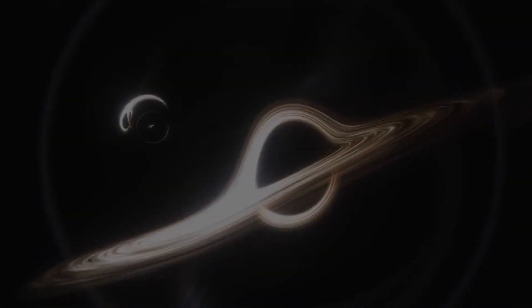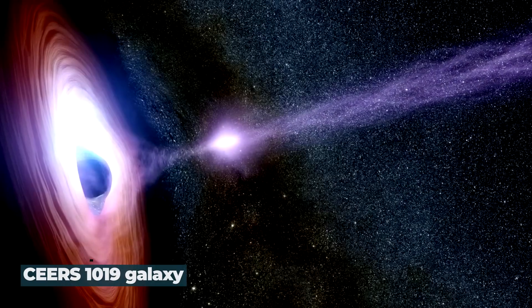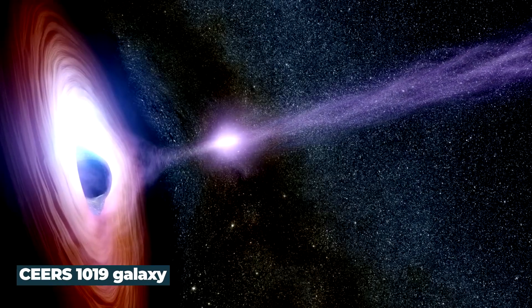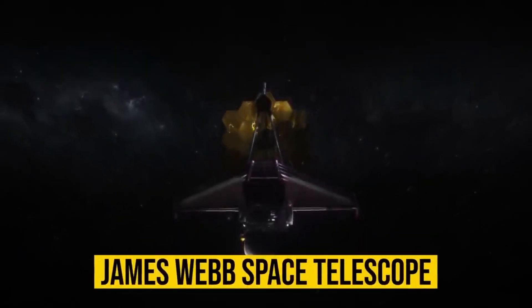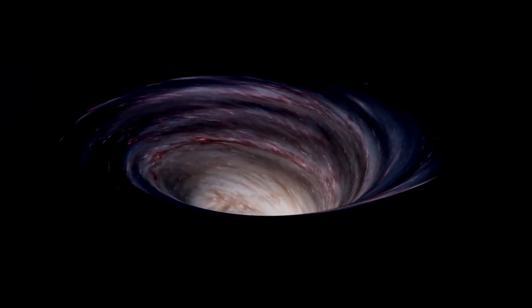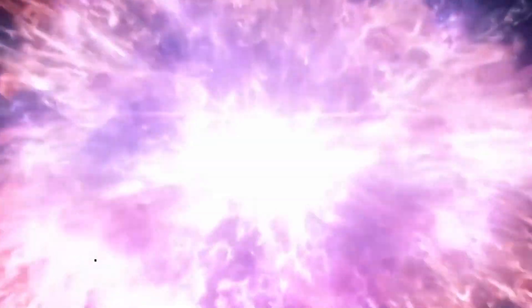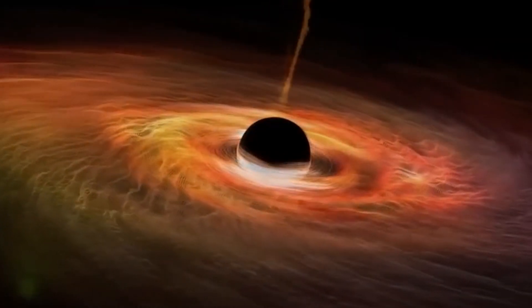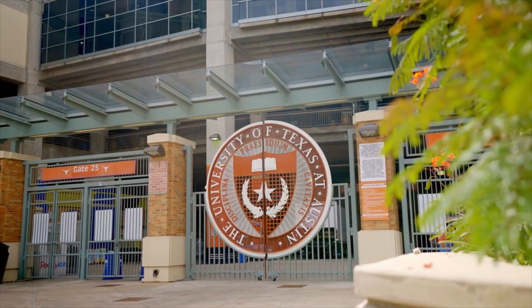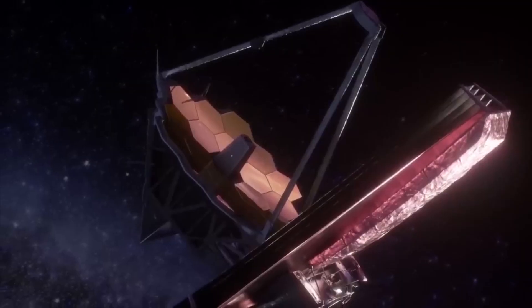Housed inside the CEERS 1019 galaxy, the potent JWST discovered the black hole that existed little over 570 million years after the Big Bang. The evidence of the supermassive black hole was presented by Stephen Finkelstein of the University of Texas at Austin at Webb's Cosmic Evolution Early Release Science, also known as CEERS survey.